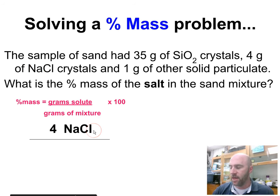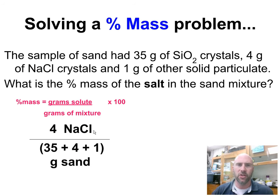4 grams divided by the whole mixture. What's the mass of the whole mixture? I'm just going to take my 35 grams plus my 4 grams plus my 1 gram. To total those guys up, that ends up to be 40. So I end up with 4 divided by 40, times 100, 10% salt.